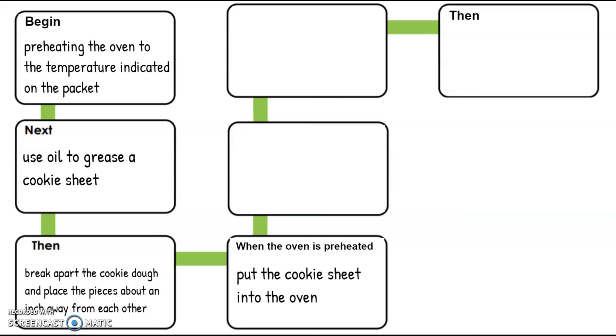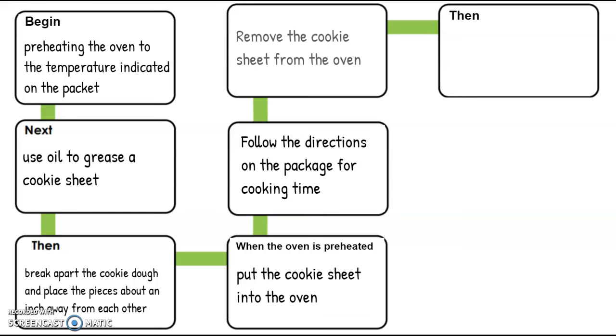When the oven is preheated, put the cookie sheet in the oven. The next two steps didn't tell me when to do it, but based on logical reasoning and the way that they were organized in the paragraph, the next one was to follow the directions for the cooking time, remove the cookie sheet from the oven, and then transfer the cookies from the sheet to a rack to cool.